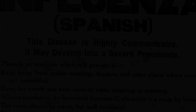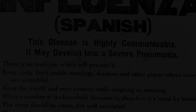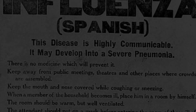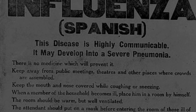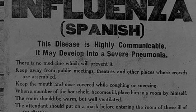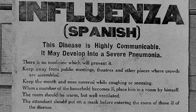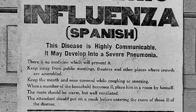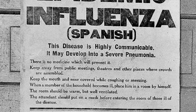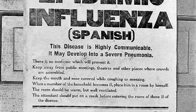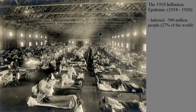There is no medicine which will prevent it. Keep away from public meetings, theaters, and other places where crowds are assembled. Keep the mouth and nose covered while coughing and sneezing. When a member of the household becomes ill, place him in a room by himself. The room should be warmed but well ventilated. The attendant should put on a mask before entering the room. These were some pieces of advice given out to people who lived under one of history's worst epidemics, the 1918 influenza epidemic, more commonly known as the Spanish flu.